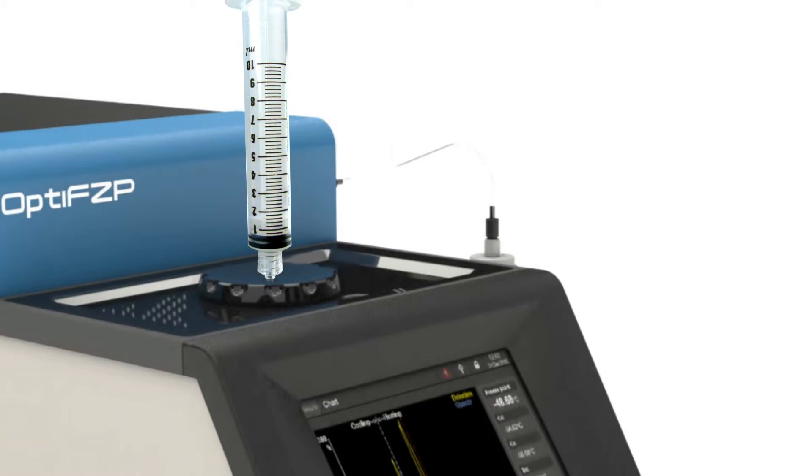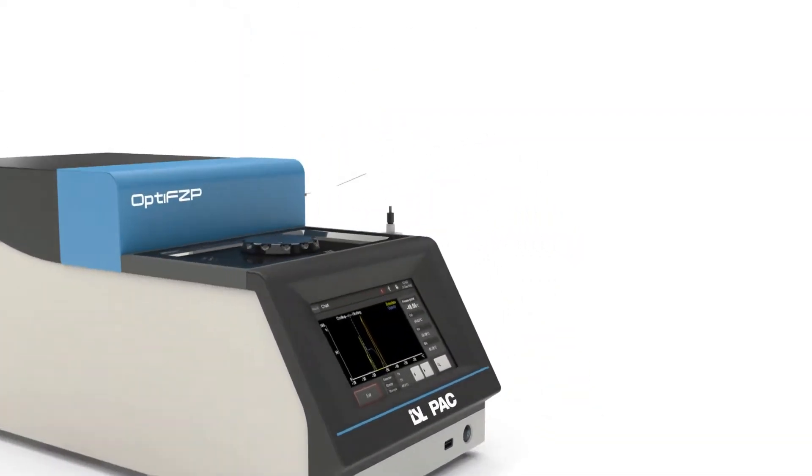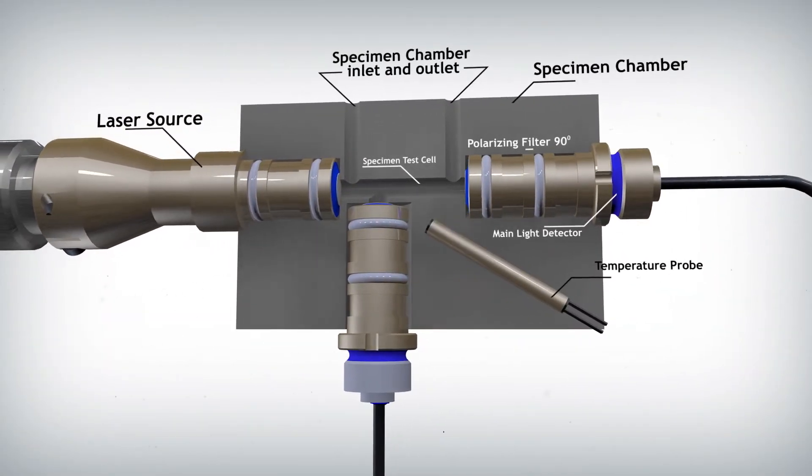The instrument takes care of the rest. OPTI-FZP is based on a unique and patented detection system using powerful optics technology. There are two optical sensors: the main detector and the opacity detector.